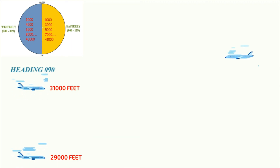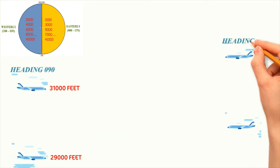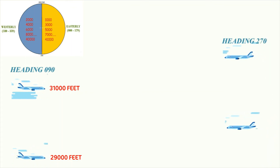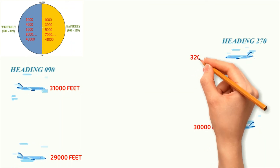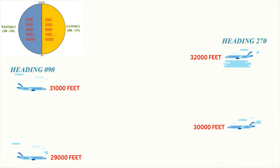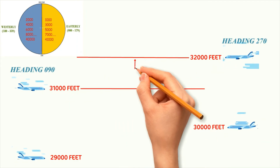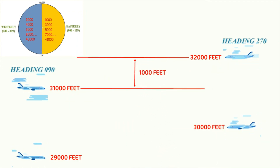Now consider two aircraft flying on a westerly heading, say 270 degrees. So they can fly only at even levels — for example, 30,000 feet and 32,000 feet. As you can see, this system automatically ensures a minimum of 1,000 feet separation between aircraft flying in opposite directions.